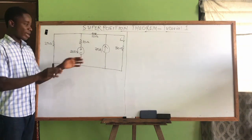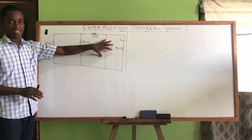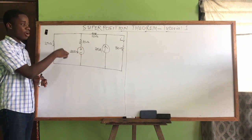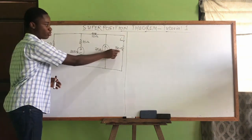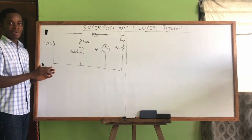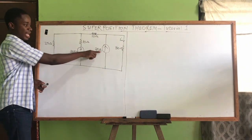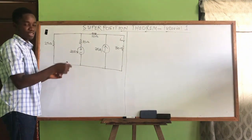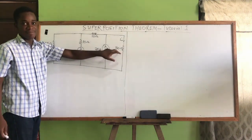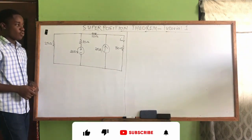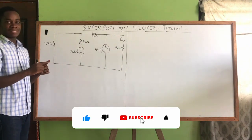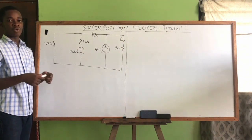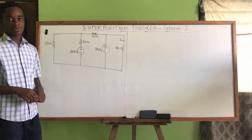We are going to let this voltage source act alone while the current source is turned off or deactivated. We use that circuit to calculate the current flowing through the 30 ohms resistor, then put that value down. Then we let the 20 amperes act while the voltage source is deactivated, and use that circuit to calculate the current through that same 30 ohms resistor. After that, we superimpose — algebraically add — those two currents to get the total current.